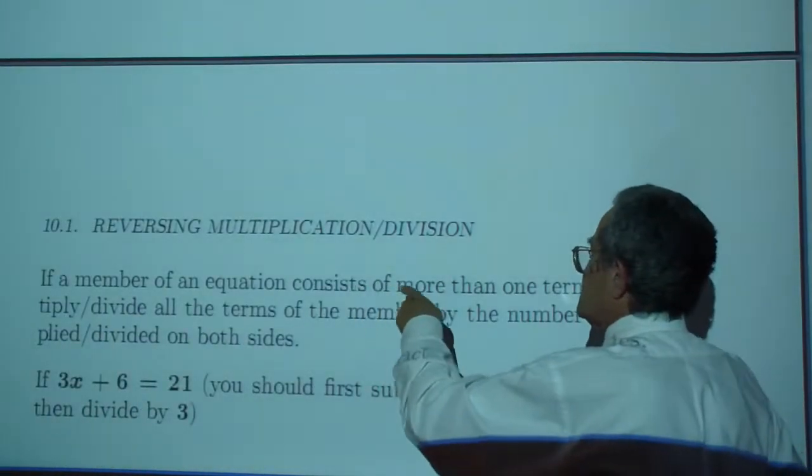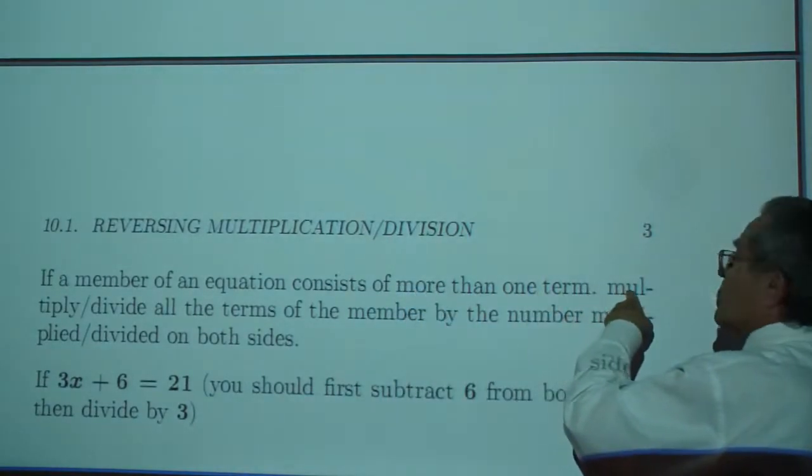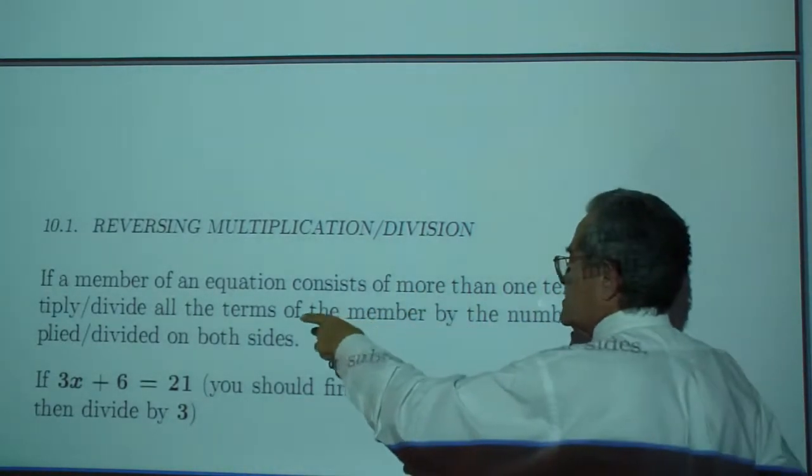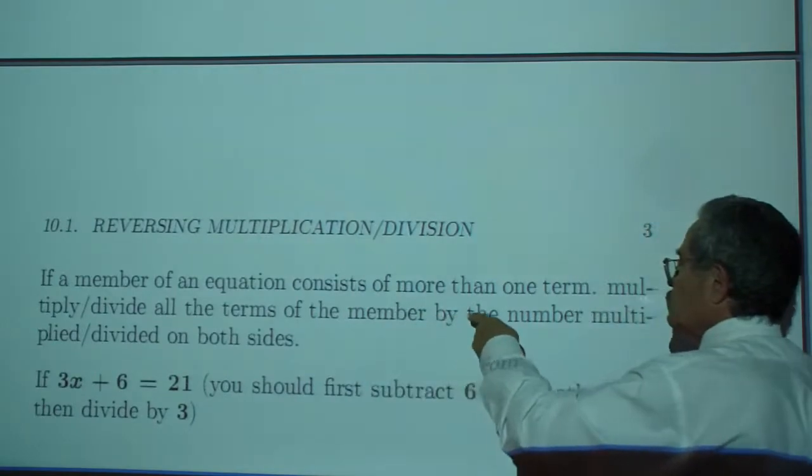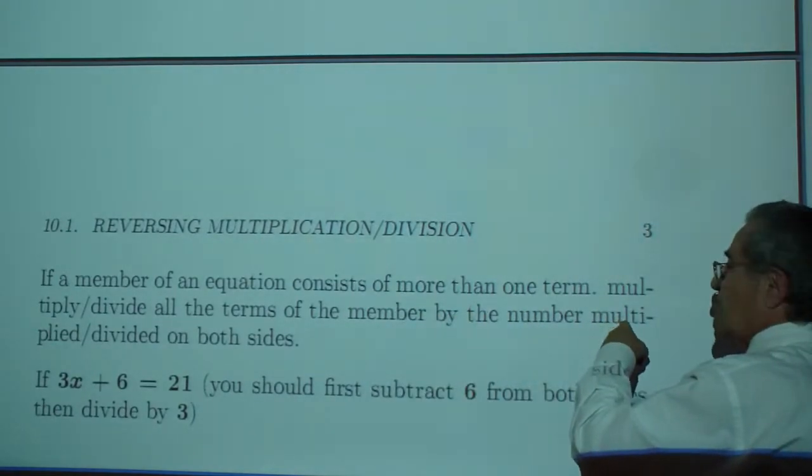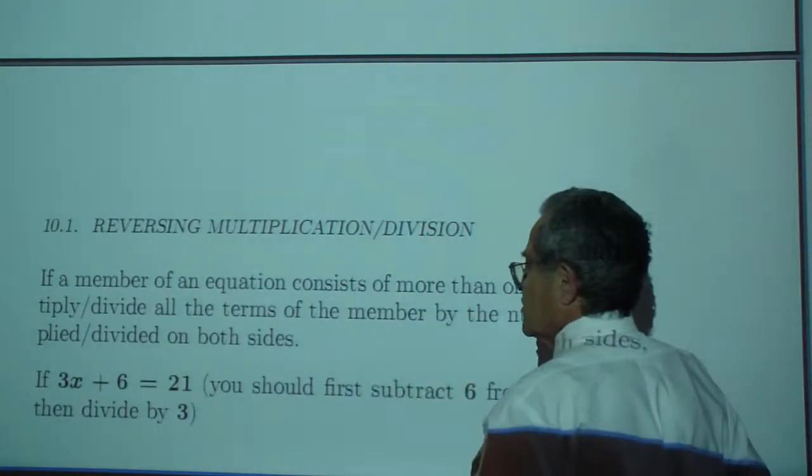If a member of an equation consists of more than one term, multiply or divide all the terms of the member by the number multiplied or divided on both sides.